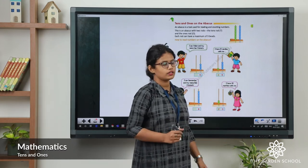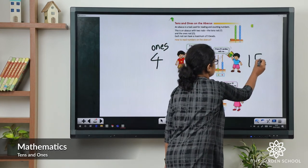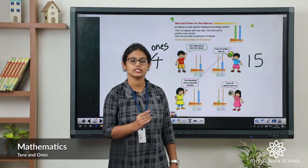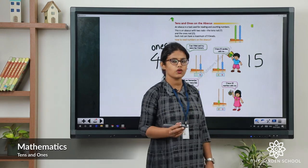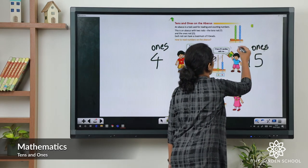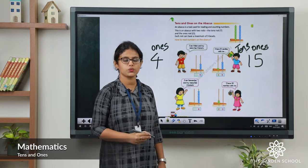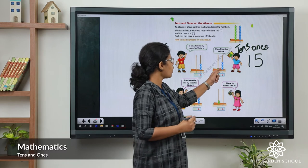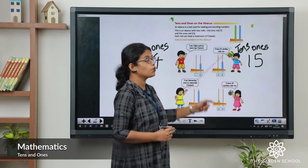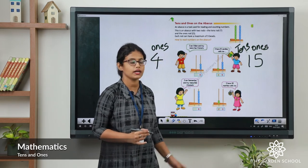Let's take another one. I have 15 kantis. 15 is a two-digit number. The place value of five is ones and one is tens. So in ones place we draw 5 beads: 1, 2, 3, 4, 5. Then in tens place, one. It makes which number? 15.